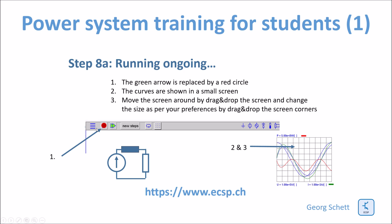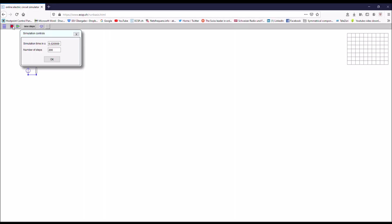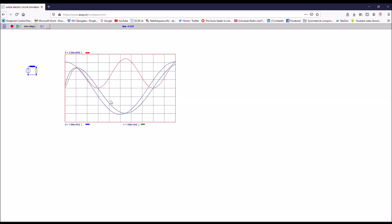If everything has been entered properly, the green arrow is replaced by a red circle. Then immediately you see this screen popping up with the curves you wanted to see. You can move the screen around by drag and drop. You can also change the size of the screen by touching one of the corners and dragging it. So the screen size changes according to your needs. Let's now demo — I want to see 20 milliseconds and 200 steps, which are OK for this circuit. I get my curves and can resize the screen as I like.